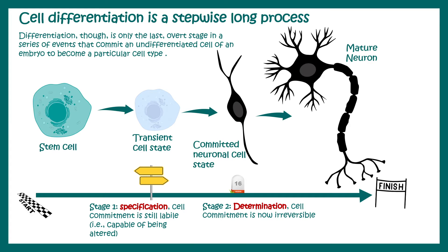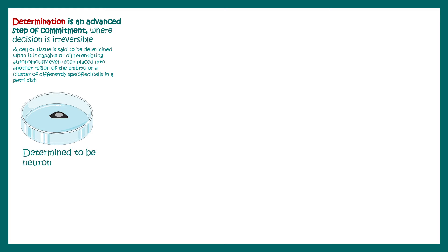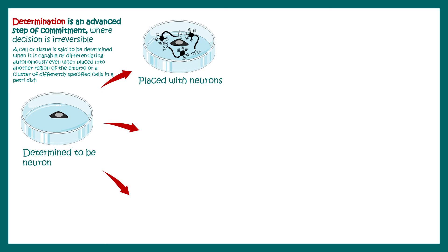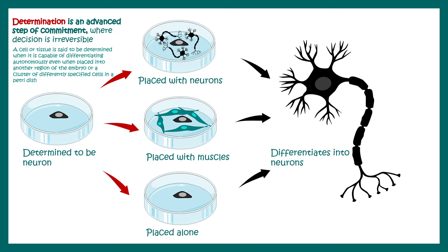The next stage is determination — a more advanced stage of commitment. Once a cell is determined to take a fate, it cannot reverse; external and internal influences no longer matter. For example, once a cell is determined to be a neuron, whether you keep it near neurons, near muscle, or alone, in all these cases it would ultimately become a neuron. Once determined, its fate cannot be changed by internal or external cues.